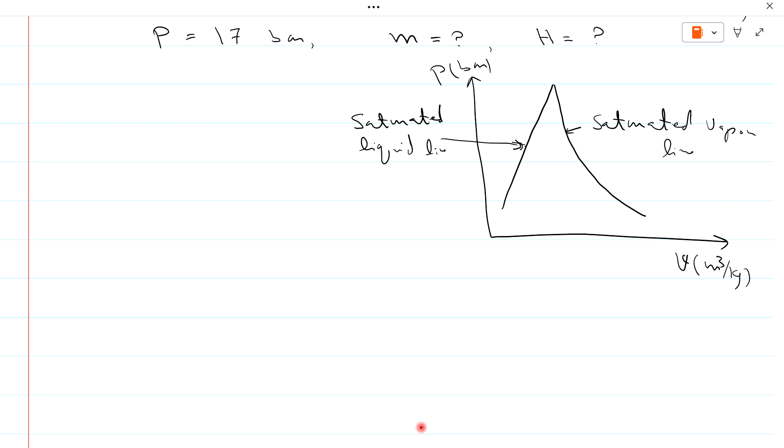And this line when the liquid is completely dry saturated. Here we depend a term dry inspiration, so at this point dry inspiration will be from 0 to 1. And this region is called wet region and this region is called superheated region.